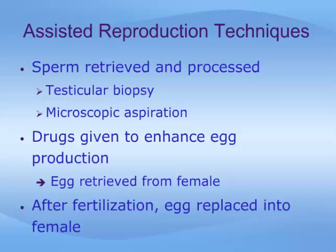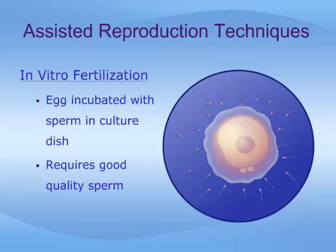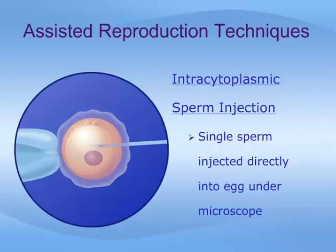Following fertilization, the egg is replaced back into the woman's uterus, or womb. In IVF, fertilization is accomplished by incubating the egg with sperm in a culture dish. This technique relies on good quality sperm capable of penetrating the egg and fertilizing it on their own. In ICSI, normal sperm function is not required, as an individual sperm is injected directly into the egg under a microscope.